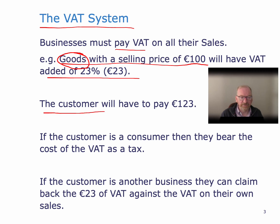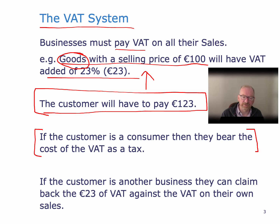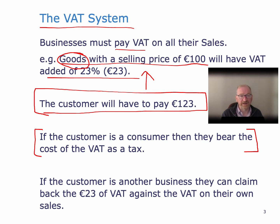The customer for those goods will have to pay €123 in cash — they pay the VAT as well as the selling price. That is received by the original company, so €123 goes to the seller, and some of that €123 needs to be paid over to the revenue. If the customer is a consumer — somebody who is going to consume the goods — then they bear the cost of the VAT. They can't claim it back from anybody; they just pay the VAT. So when you go into a shop and buy some clothes or groceries, you will be paying VAT on those goods. If you look carefully at your receipt, you'll see that VAT. However, consumers don't really care about it because it's just part of the cost of the goods — they can't claim it back from anybody.